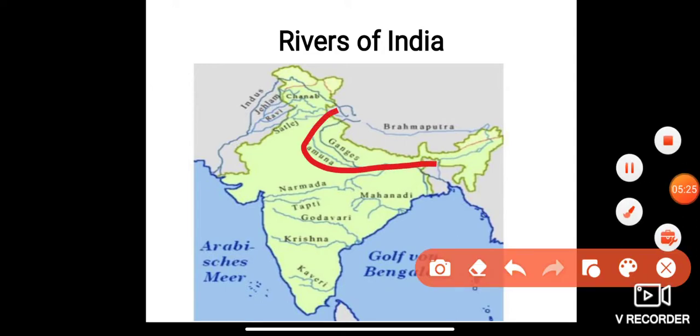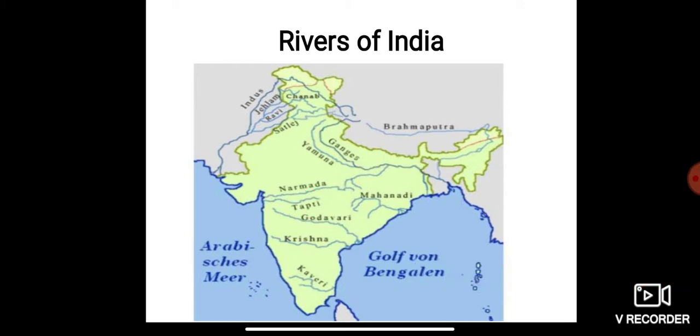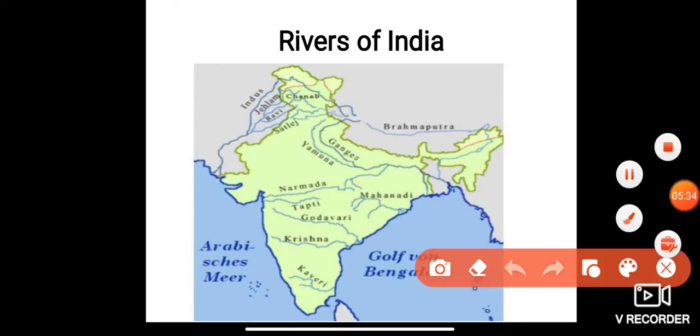These blue lines are rivers — very important rivers. Some rivers are located in the north, and some rivers are located in the south.